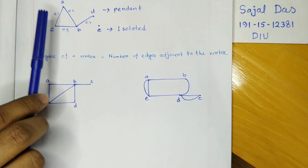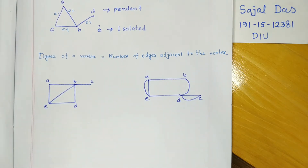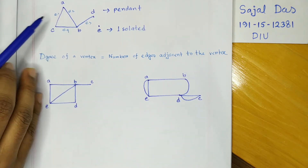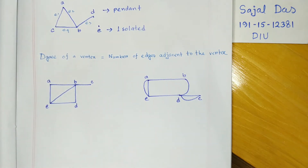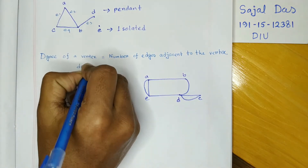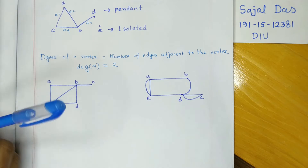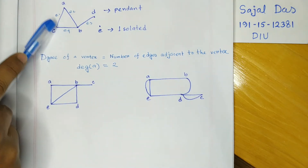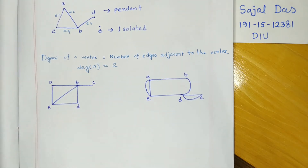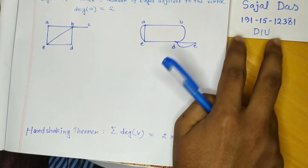The degree of a vertex is the number of edges adjacent to that vertex. We already noted that a has edges e1 and e2, so the degree of a equals 2. Similarly, the degree of c is 2, degree of b is 2, degree of d is 1, and degree of e is 0.